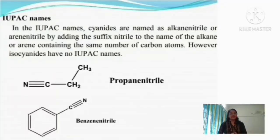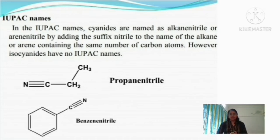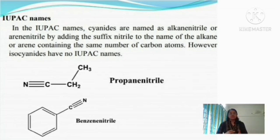Next, how to name cyanide compounds by IUPAC name. There is no IUPAC name for isocyanide — they are usually named by common manner only. Cyanide compounds are IUPAC named as alkanenitrile or arenenitrile: we name the alkane with the same number of carbon atoms and add the suffix '-nitrile.' For example, CH₃CH₂CN is propanenitrile, and C₆H₅CN is benzenecarbonitrile (benzonitrile).